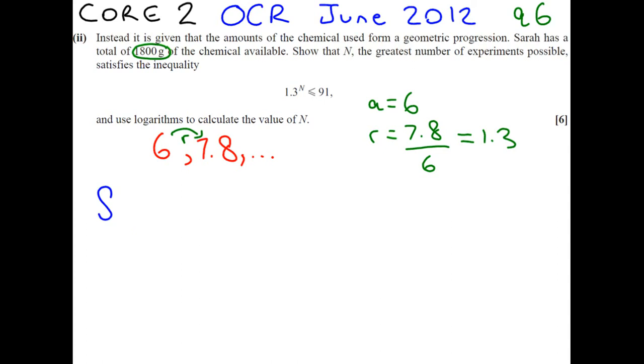So if we look at the formula for geometric series, S n is a 1 minus r to the n over 1 minus r. In our case, we do not know what n is. So we're going to call it big n, because that's been suggested in our question.